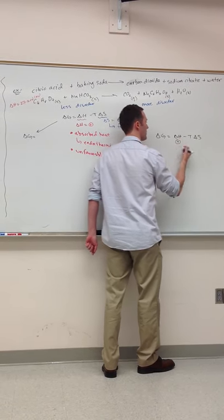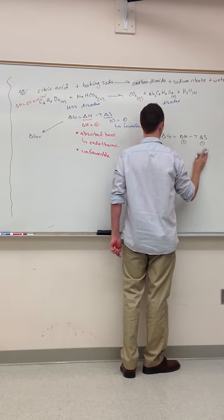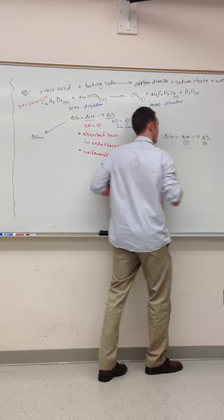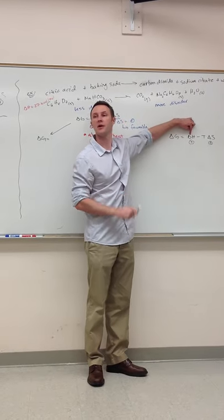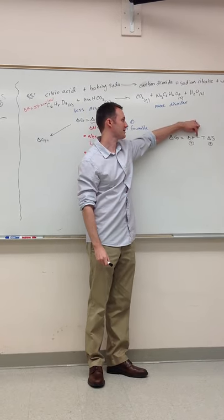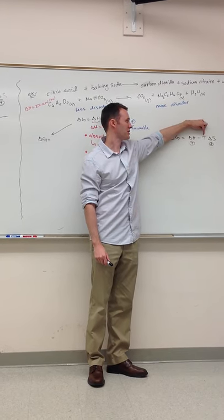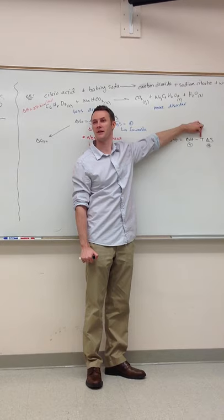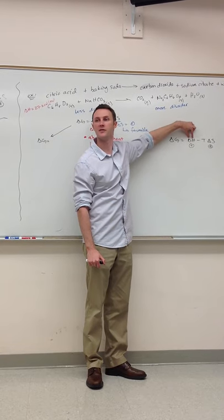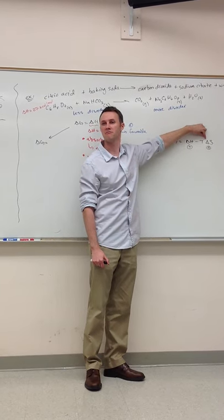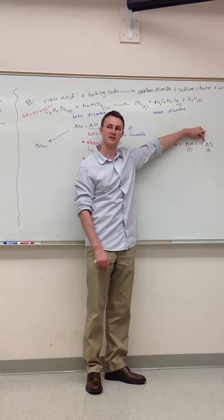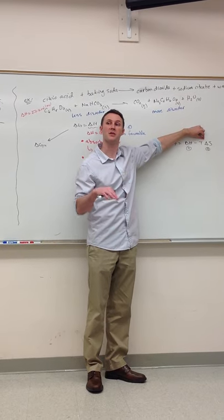We said delta H is a positive value, right? Delta S is a negative. Sorry, it's also a positive. So here I have a positive number minus some number. But this number can change sizes depending on the temperature, right? So if I have a positive number and I'm subtracting something, if it's small, it's going to stay positive. But if it's really big, then it's going to be negative, right?